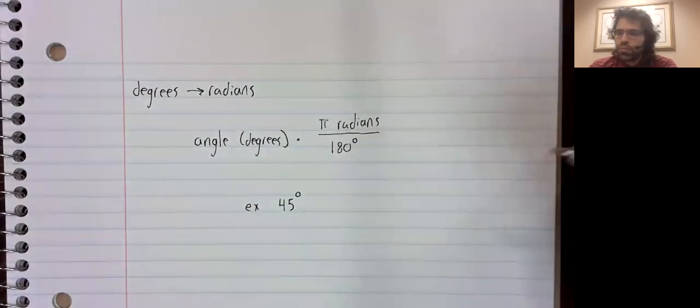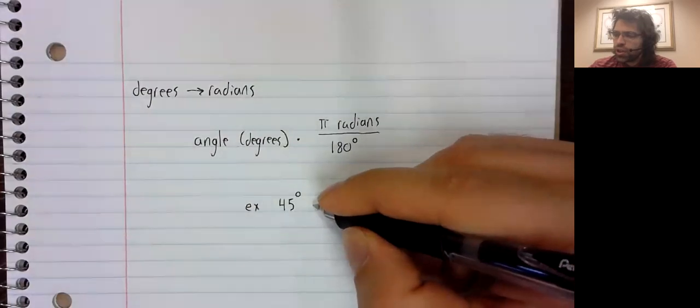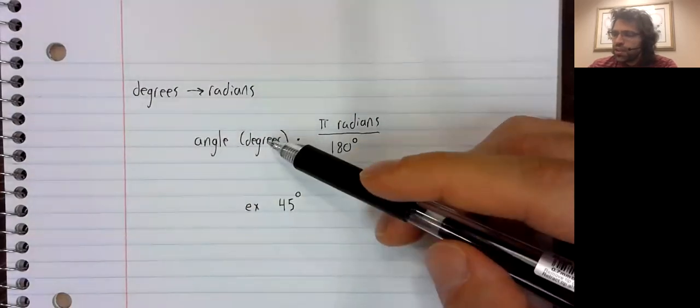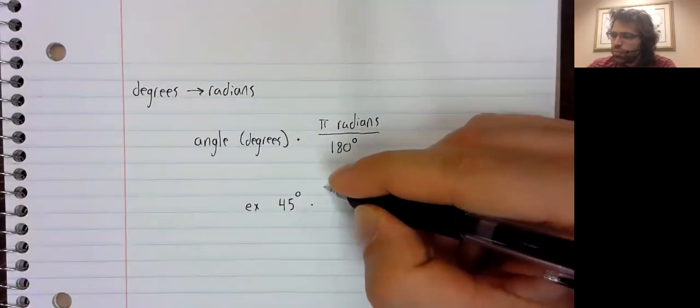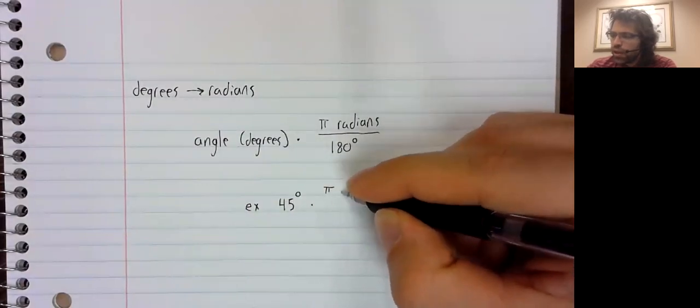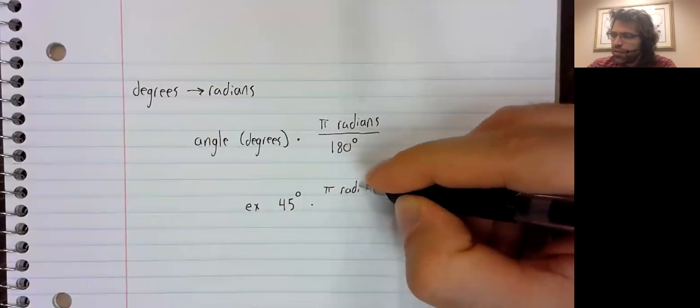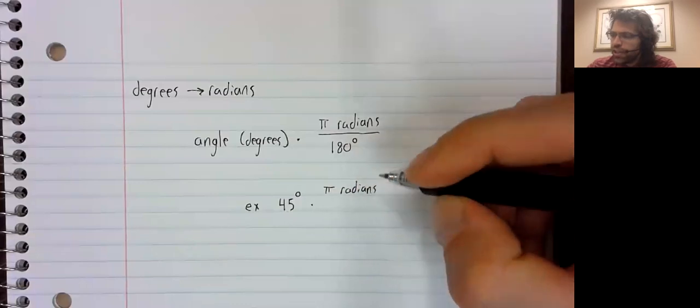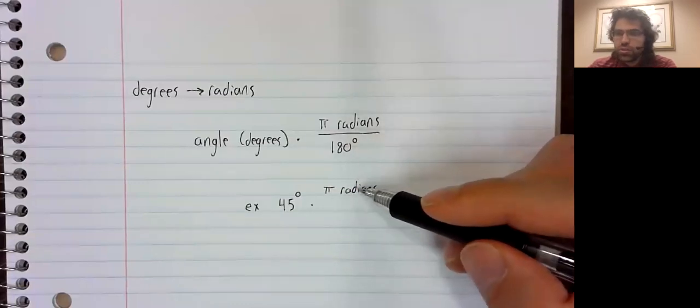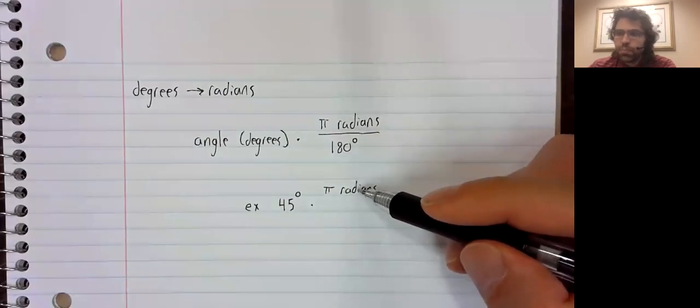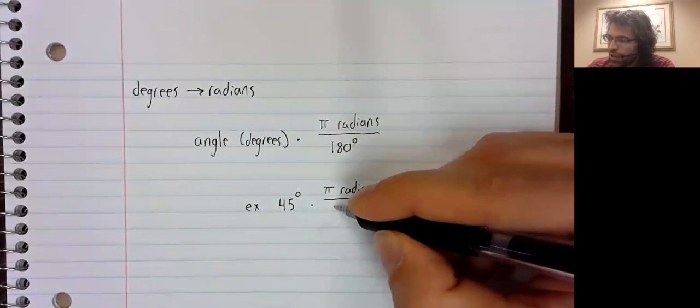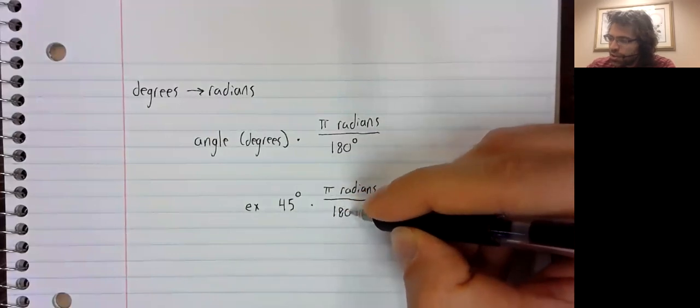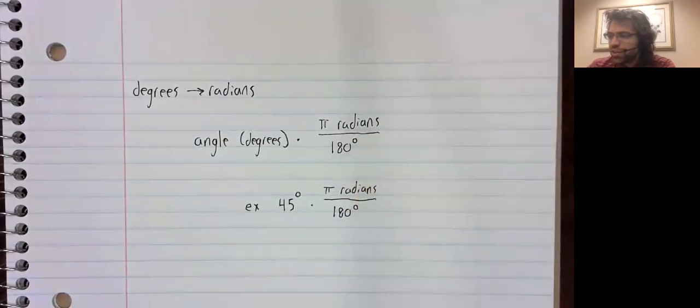Let's perform that conversion. We'll take this angle in degrees and we multiply by pi radians. Radians do not have a symbol associated with them, not like the degree symbol.